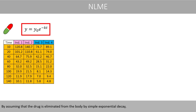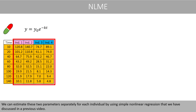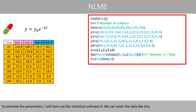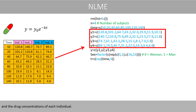By assuming that the drug is eliminated from the body by simple exponential decay, we can estimate the initial concentration of the drug in the blood, as well as the elimination rate. We can estimate these two parameters separately for each individual by using simple non-linear regression that we have discussed in the previous video. To estimate the parameters, I will here use the statistical software R. We can enter the data like this, where we plug in the time points and the drug concentrations of each individual.